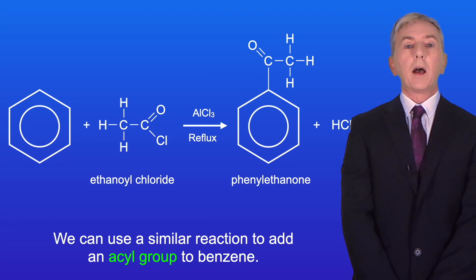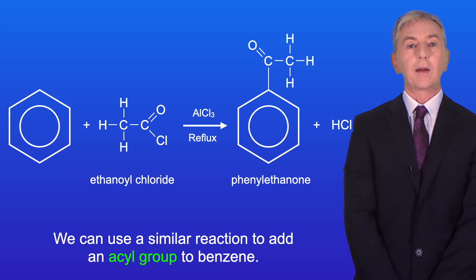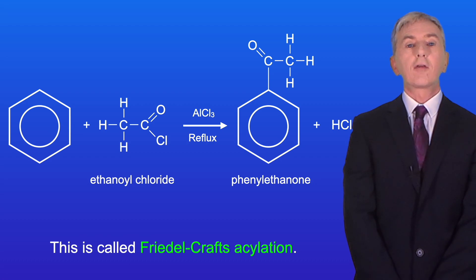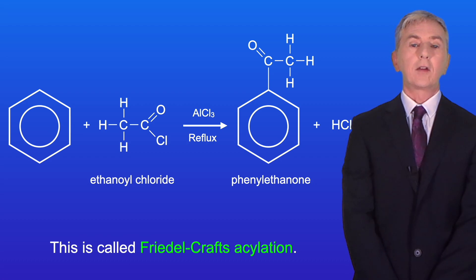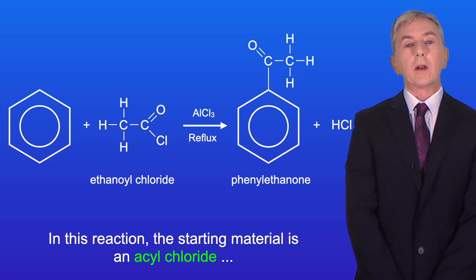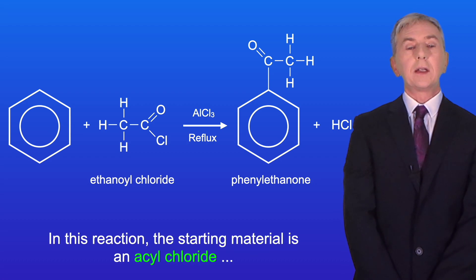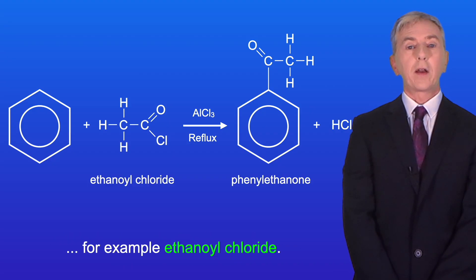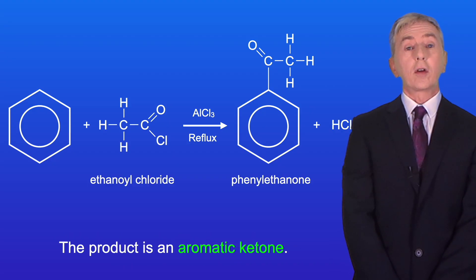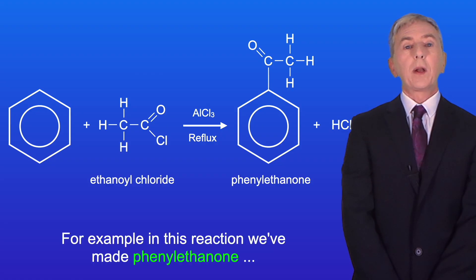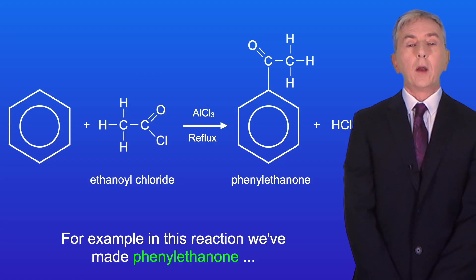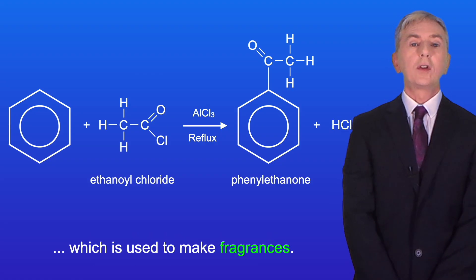Now we can use a similar reaction to add an acyl group to benzene — this is called Friedel-Crafts acylation. In this reaction the starting material is an acyl chloride, for example ethanoyl chloride, and the product is an aromatic ketone. For example, in this reaction we've made phenylethanone, which is used to make fragrances.